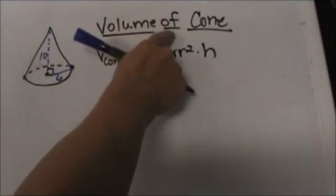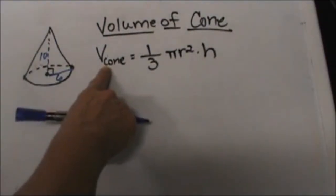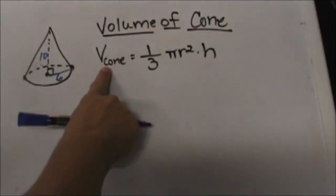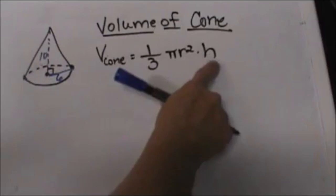Today we are going to look at how to find the volume of a cone. So how much ice cream can you cram down in your ice cream cone. The volume of a cone is the formula is one third pi r squared times h.